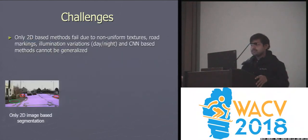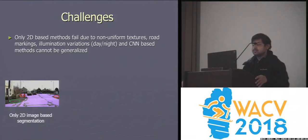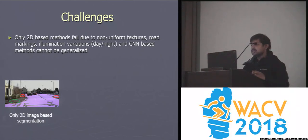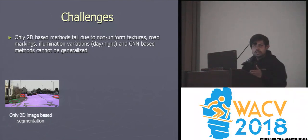What are the main challenges here? If we use 2D-based priors for road detection, using images only, these methods fail when the textures are non-uniform or illumination changes, such as between day and night. Even CNN-based techniques trained on particular datasets fail to generalize on roads, mainly on Indian roads.